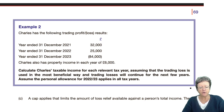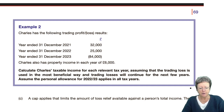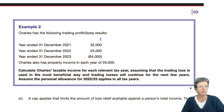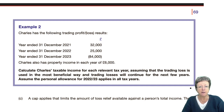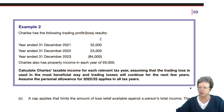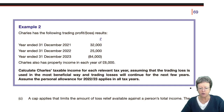He's been in business some time. For the year ended 31st December 2021 he has a profit of 32,000. In 2022, 25,000. In the year ended December 2023, something went wrong because he made a massive loss of 84,000. But he also has property income in the year of 6,000. The question asks us to calculate Charles's taxable income for each of the relevant tax years, assuming that the trade loss is used in the most beneficial way.